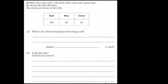Here's a typical exam question now. Matthew has a dice with three red faces, two blue faces, and one green face. And he throws the dice 300 times. Here are the results in the table. So it says, what's the relative frequency of throwing a red? So altogether, he throws it 300 times, and he gets 153 reds. So what we're going to do then is, we're just going to write that as the experimental probability, the relative frequency. So it's the number of successes, 153, over the number of trials, which was 300. So that's the relative frequency of getting a red.